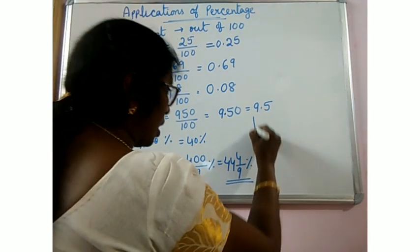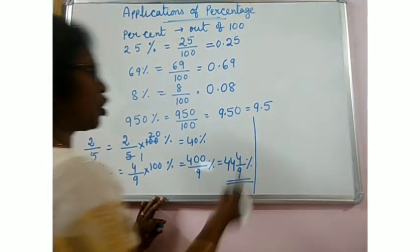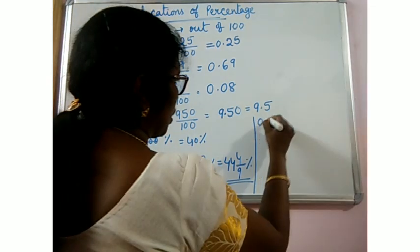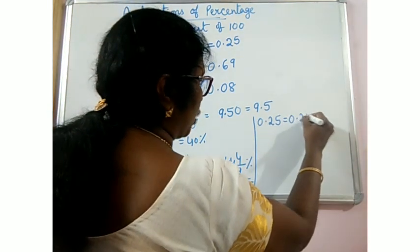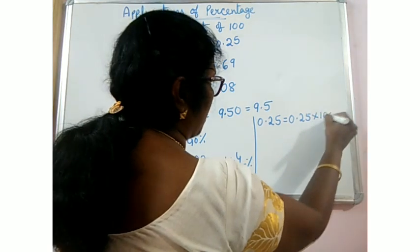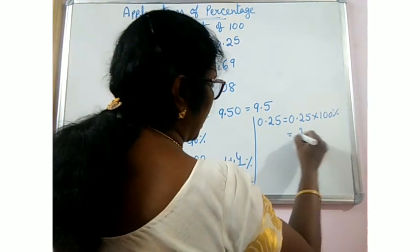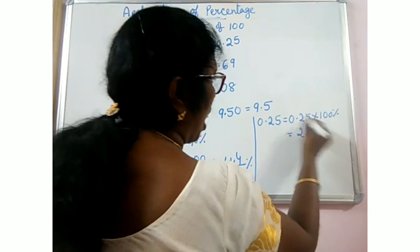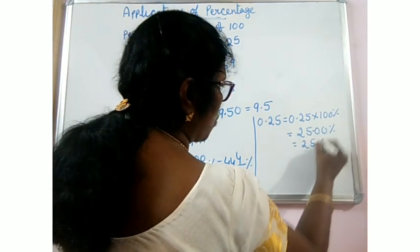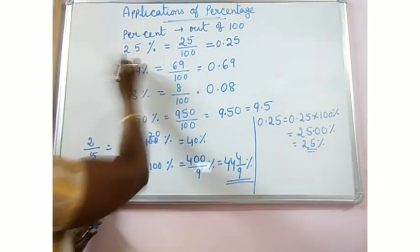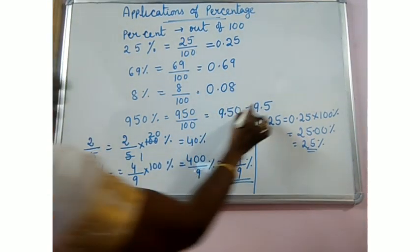If the given is a decimal also, in example we will take 0.25, the decimal number. If you want to convert to percentage, multiply by 100%. You will get 25, after 2 places decimal, that means 25%.